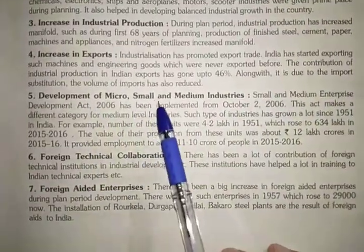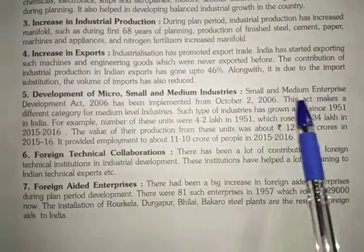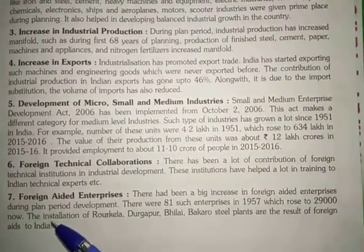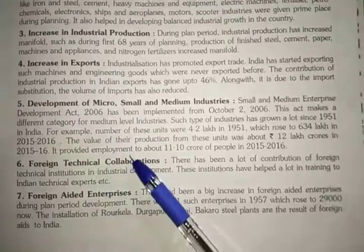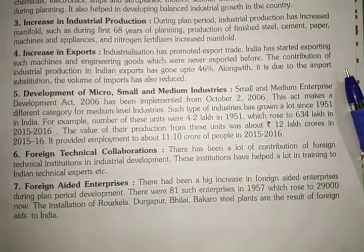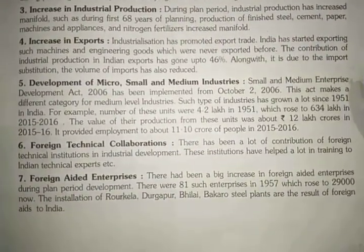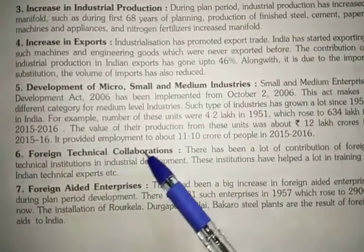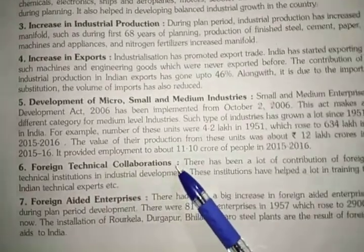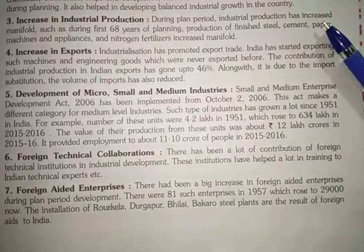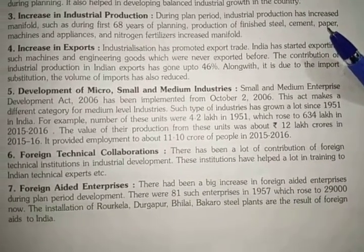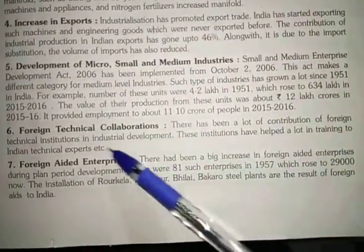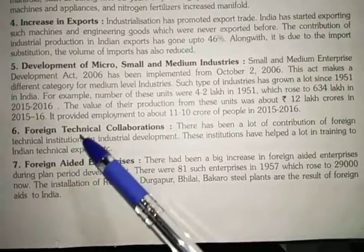Next is development of micro, small, and medium industries. The Small and Medium Industry Act was passed in 2006, which gave initiative to micro, small, and medium industries. A lot of people invested in them and their development was seen simultaneously, because investment and raw materials were already available with a lot of motivation. Next is foreign technical collaboration — whenever we needed technology, we looked to developed countries, took training from them, and developed our industrial system with the help of foreign experts.